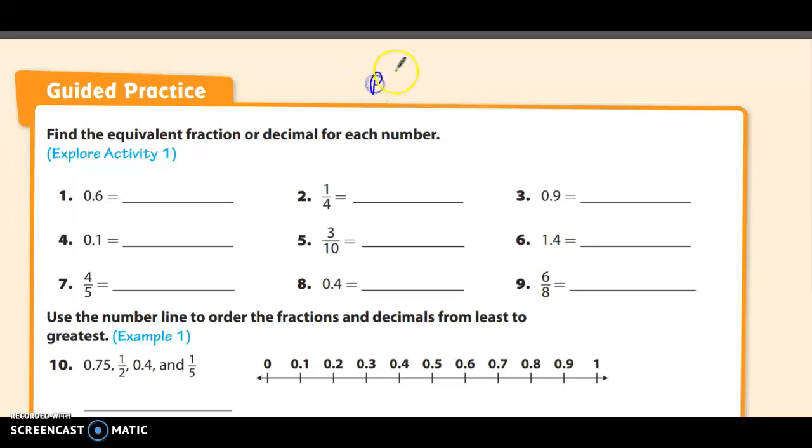We are on page 62. This is the guided practice. And the beginning of the page says, find the equivalent fraction or decimal for each number. It's kind of like that number line thing. In fact, a lot of these are on the number line.